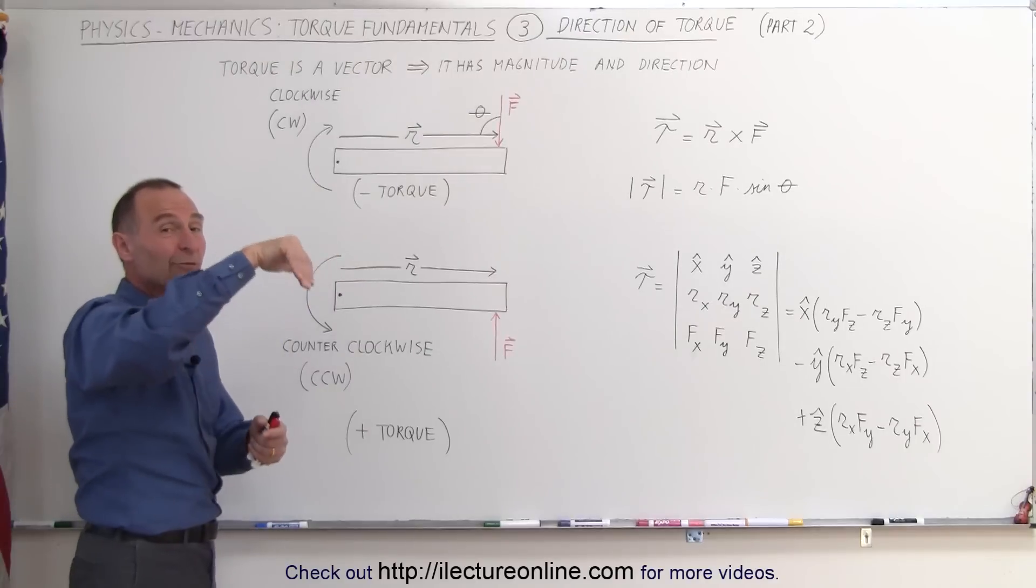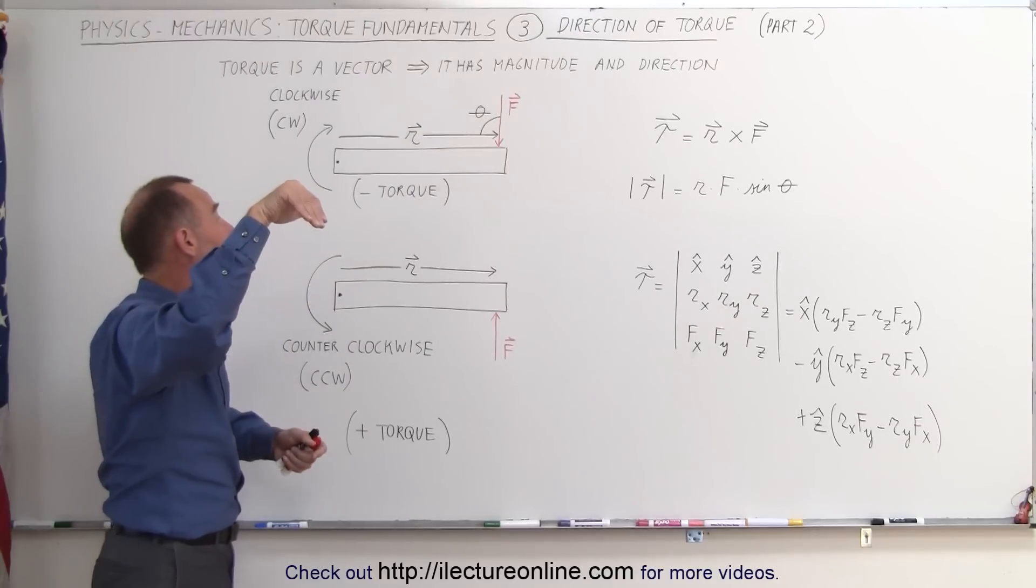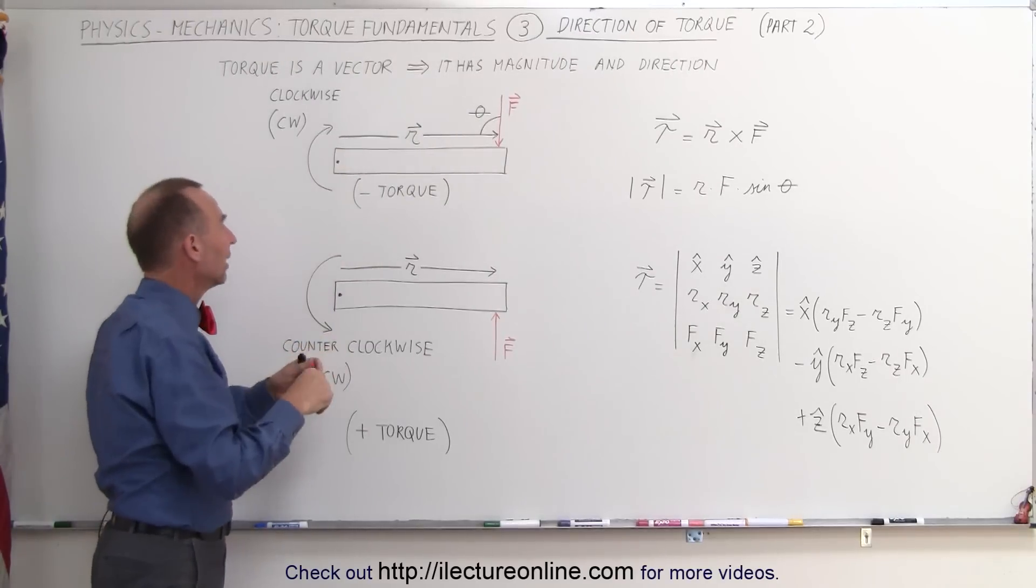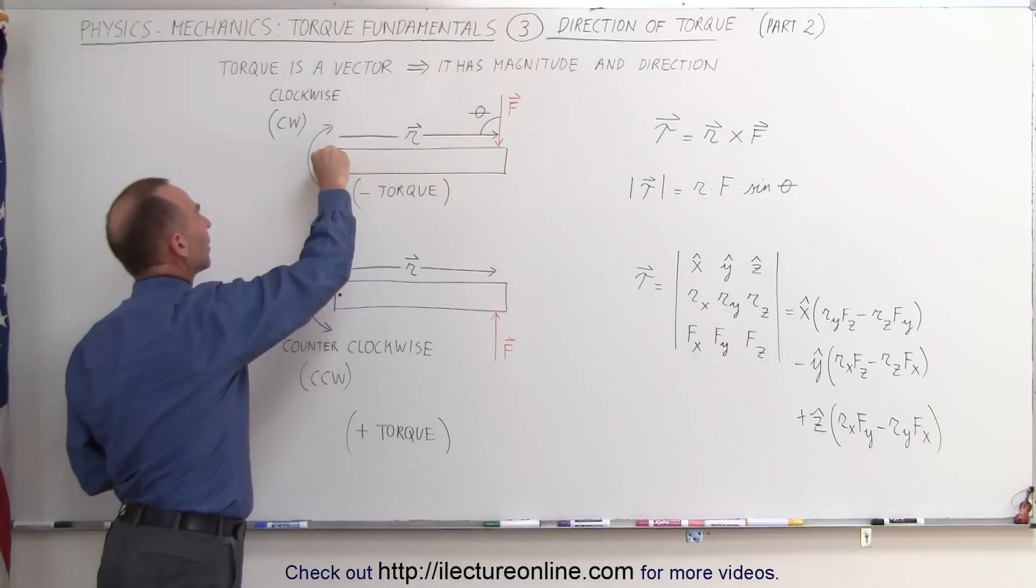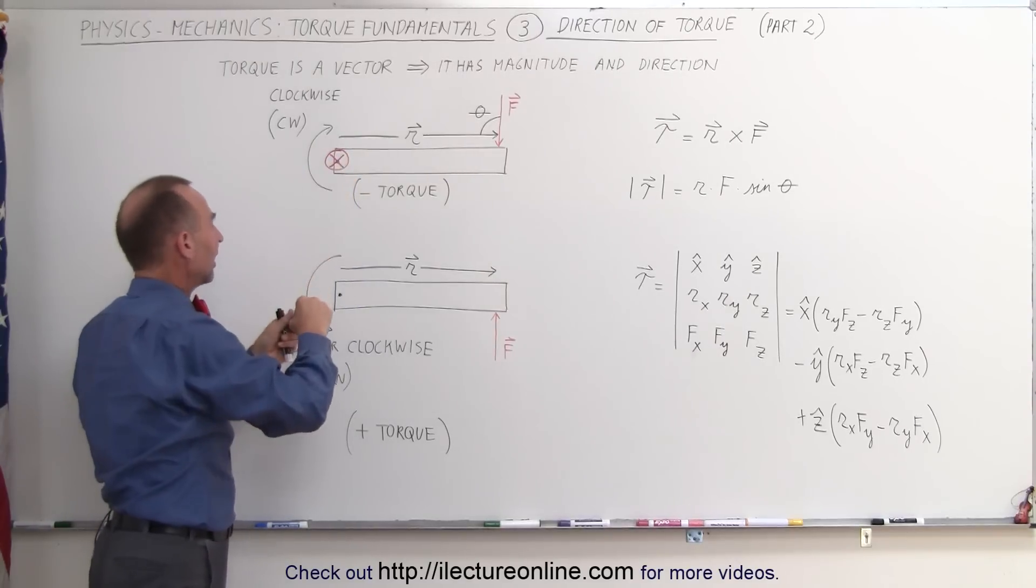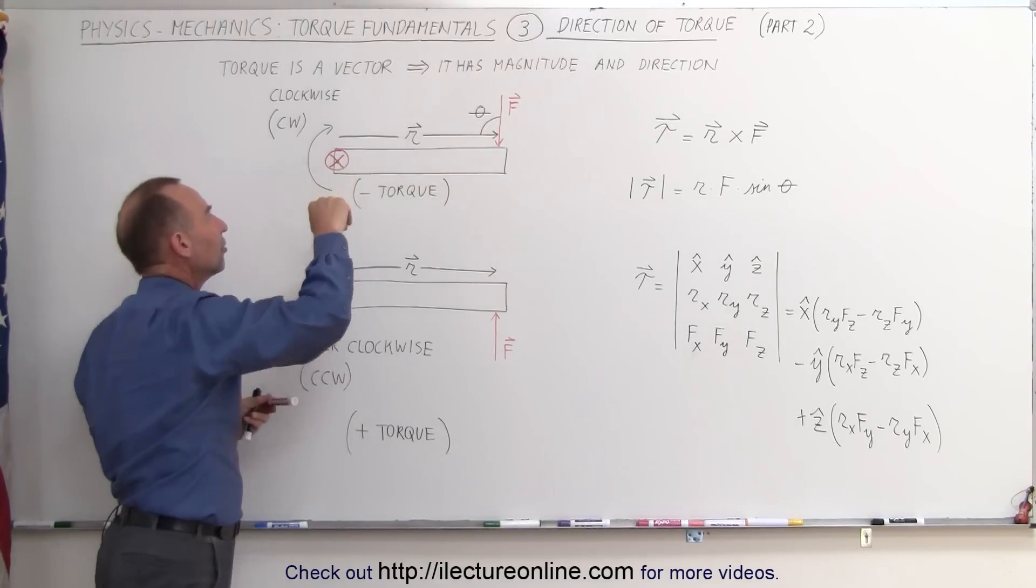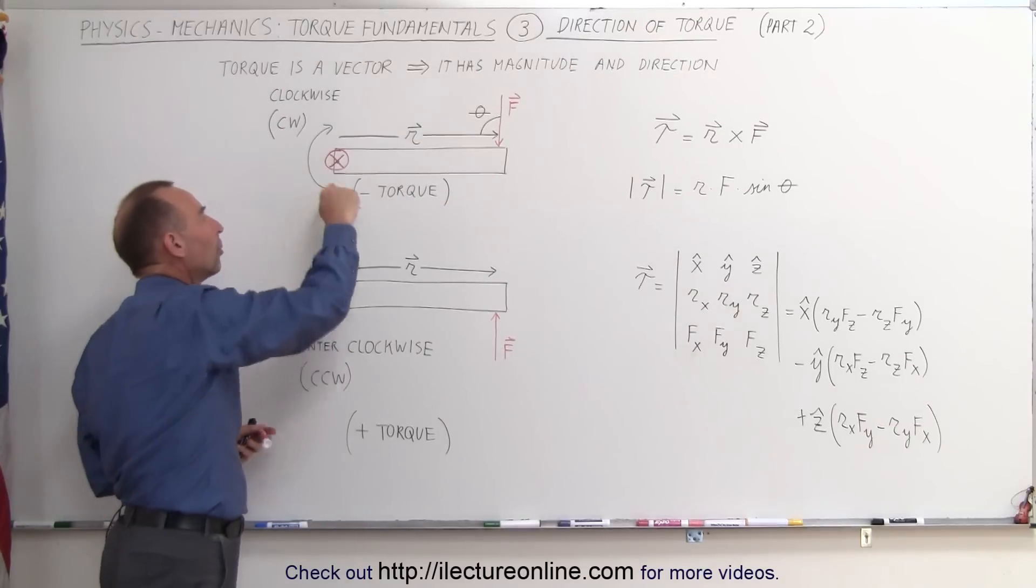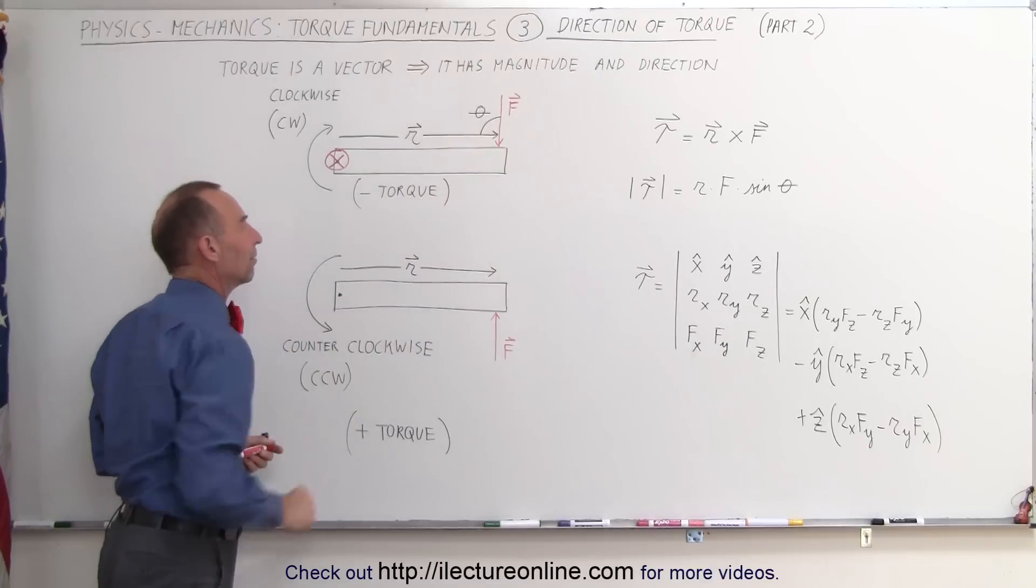Notice that means from a vector quantity, the torque is pointing into the board, and I can do that by simply drawing a cross like there. There, that indicates that at the point of rotation, the torque is into the board. That causes it to be a negative torque.